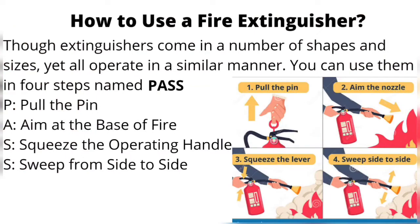How to use a fire extinguisher. Though extinguishers come in a number of shapes and sizes, they all operate in a similar manner. You can use them in four steps named PASS: P — pull the pin; A — aim at the base of the fire; S — squeeze the operating handle; S — sweep from side to side.